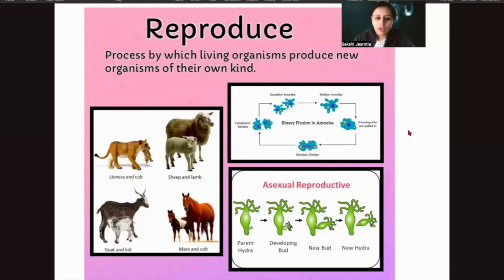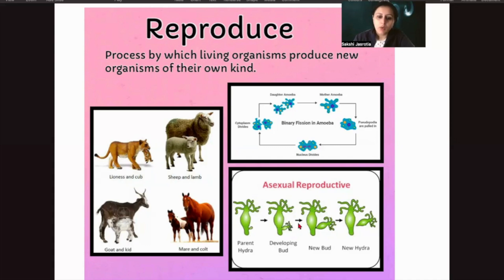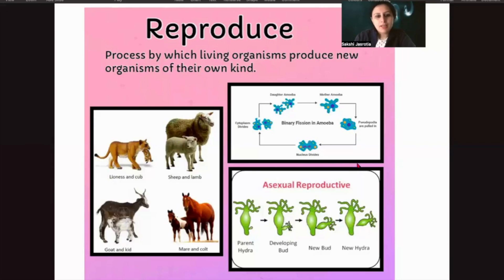Next is reproduction, another characteristic shown by all living organisms. Take amoeba — the parent amoeba undergoes binary fission: the nucleus splits into two and then the cytoplasm divides, forming two daughter amoebas. Hydra also shows asexual reproduction — the parent hydra produces a bud, and when the bud grows enough to survive on its own, it detaches from the parent and grows by itself.